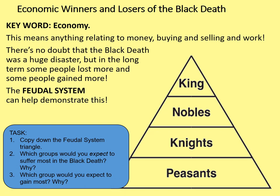First of all, copy down this feudal system triangle. The king is at the top with the most power; then the nobles are underneath him with lots of land and power; the knights have slightly less land and quite a bit less power and owe knight service or military service; and then we've got the peasants right down at the bottom, who made up the vast majority of the country's population. Secondly, which groups would you expect to suffer most in the Black Death, and which group would you expect to gain most? Pause the video while you complete that diagram and give those questions a brief answer.